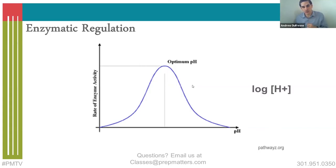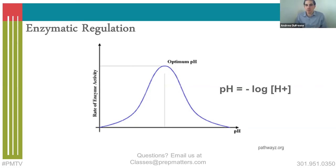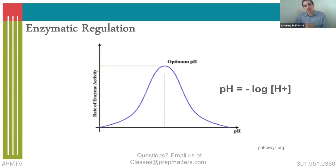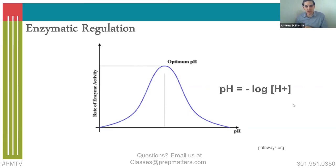One other equation you need to know: pH equals the negative log of proton concentration — that's what the bracket around H⁺ means. The higher the proton concentration, the lower the pH because of the negative sign. The lower the proton concentration, the higher the pH, on a scale of 0 to 14.